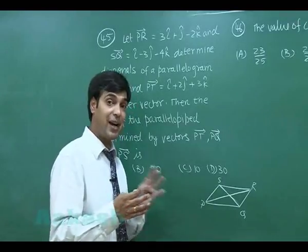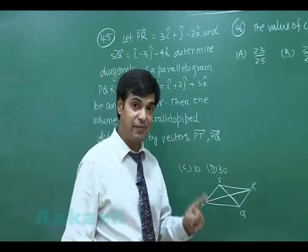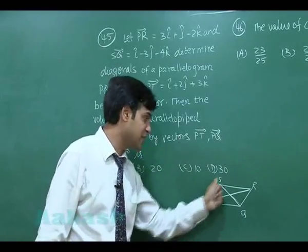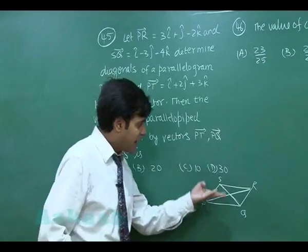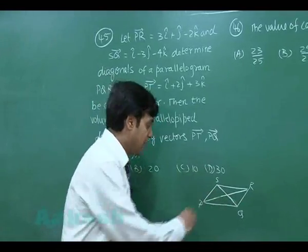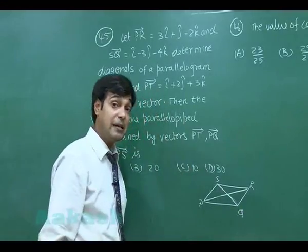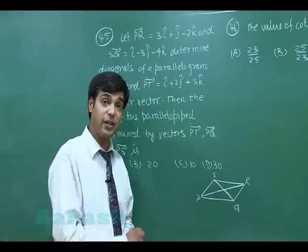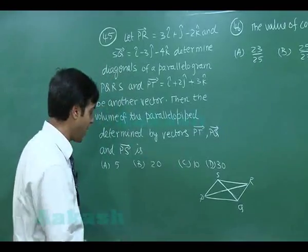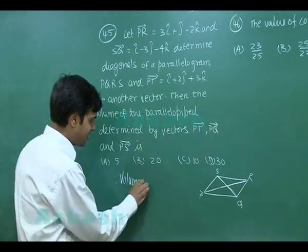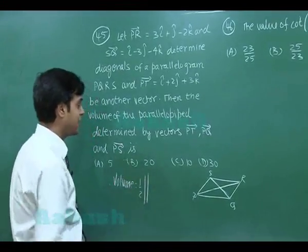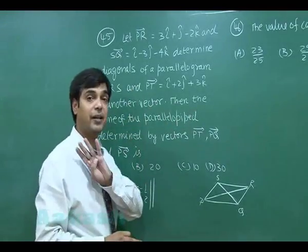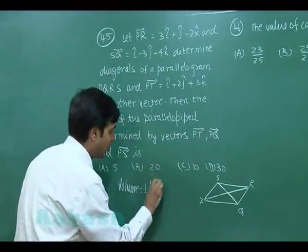The volume of the parallelepiped is the scalar triple product of PT, PQ, and PS. Instead of finding PQ and PS separately, we use the shortcut: the area of the parallelogram base equals ½ |d₁ × d₂|, so the volume is ½ |d₁ × d₂ · PT|, which equals half the modulus of the determinant formed by d₁, d₂, and PT.